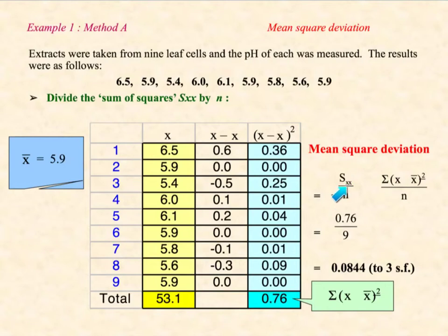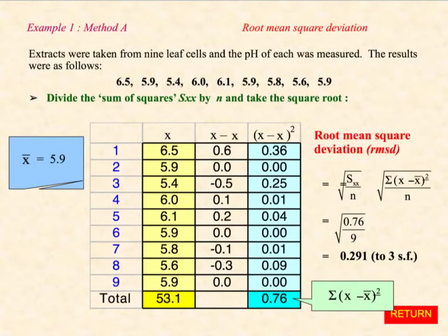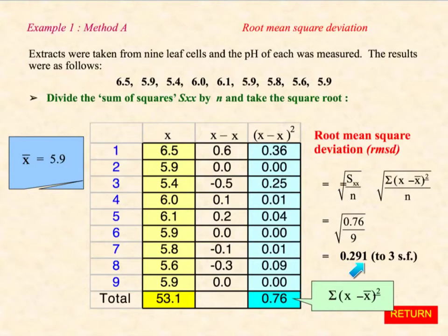Once we've got SXX, we simply divide it by N, which is the number of terms — here we've got 9 — and that gives us the mean squared deviation. Once we've got the mean squared deviation, to find the RMSD we simply take the mean squared deviation and square root it. So to recap: take X away from the mean for each item, square it — that gives us SXX. Divide it by N to get the mean squared deviation, and square root that to get the root mean squared deviation.